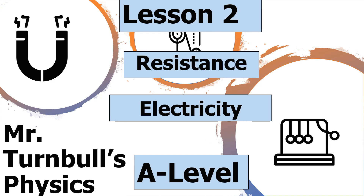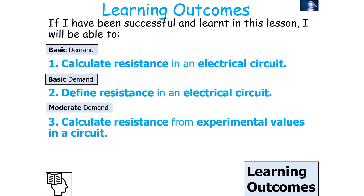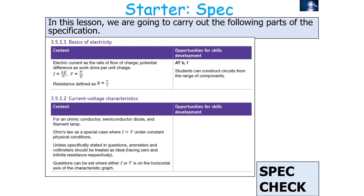Hello and welcome to this lesson on resistance, which is part of the electricity topic in AQA A-level physics. In today's lesson we're going to define and calculate the concept of resistance. By the end we should be able to calculate and define resistance in an electrical circuit, and use that to calculate resistance from experimental values. This covers AQA specification points 3.5.1.1 and 3.5.1.2.